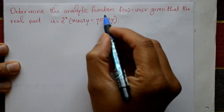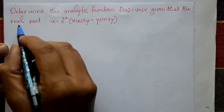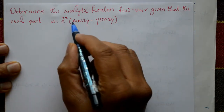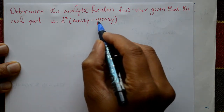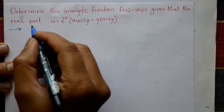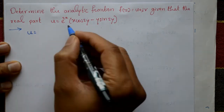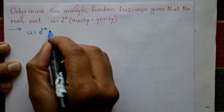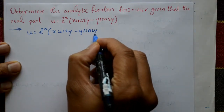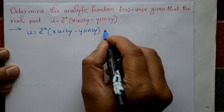Determine the analytic function f(z) = u + iv, given that the real part is u = e^(2x) * (x·cos2y - y·sin2y). This is the real part. Now differentiate u — call this equation number one.